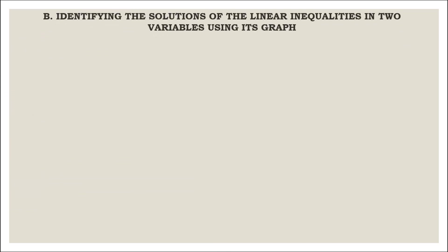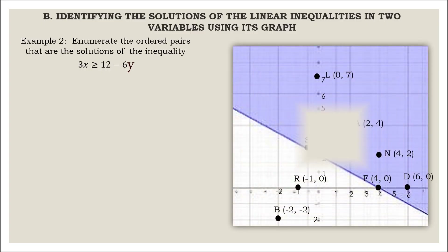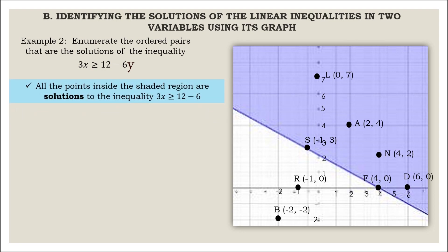Another example: Enumerate the ordered pairs that are solutions of the inequality 3x greater than or equal to 12 minus 6y. All the points inside the shaded region are solutions to the inequality 3x greater than or equal to 12 minus 6y. Examples: Point L, Point A, Point N, and Point D.